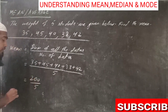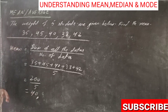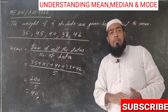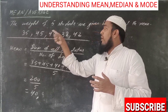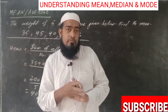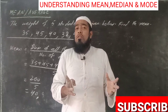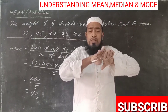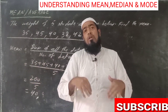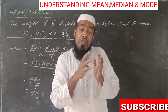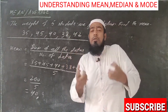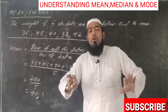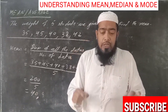So we get 200 divided by 5, which gives us 40. The mean of this particular data is 40. This means that if we take all five students' weights and distribute them equally among all five students, each student would have 40 kg. That is the concept of mean.